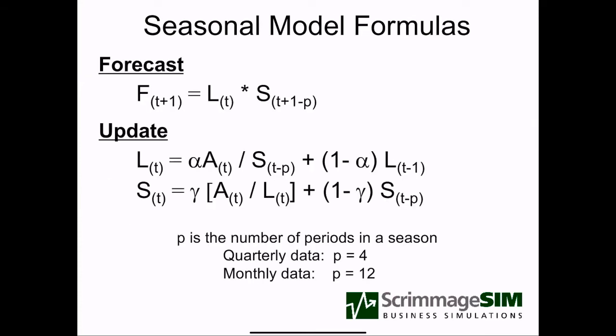The formulas for the seasonal model have a forecast value where our forecast in the next period is equal to the level that we expect we have. It's like a smoothing model where we don't think there's any trend up or down, but we're going to multiply by a seasonal factor. The notation of the seasonal factor is a little complicated — it has to do with the fact that the only thing we know about the impact of a season is what we saw the previous year.